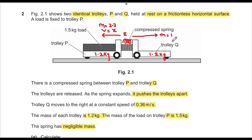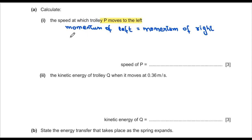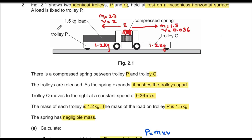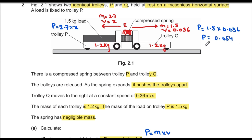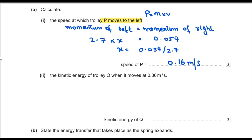Using conservation of momentum: momentum of the left trolley equals momentum of the right trolley. For trolley P: momentum = 2.7 × v. For trolley Q: momentum = 1.2 × 0.36 = 0.432. Wait — momentum of Q is 1.2 × 0.36 = 0.432, so v = 0.432 / 2.7. Actually the calculated speed of trolley P is 0.16 m/s.